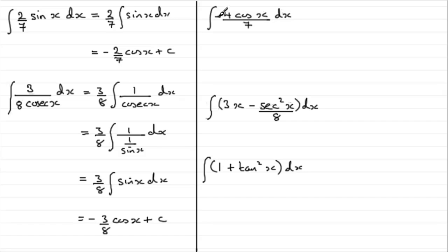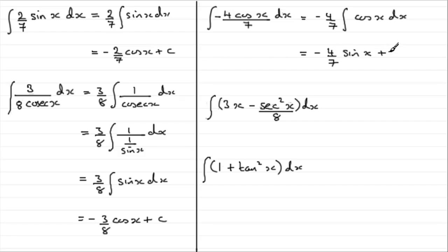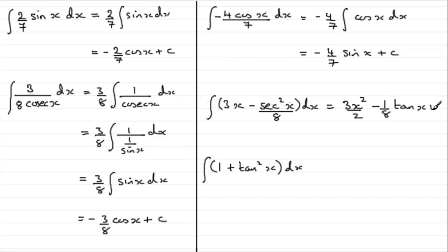For this one, take out minus 4 sevenths, and then you've got the integral of cos x with respect to x. The integral of cos x with respect to x is sin x. So we end up with minus 4 sevenths sin x plus c. And for this one, we've got two terms to integrate. We integrate 3x — that's going to be 3x squared over 2, adding 1 to the power and dividing by the new power. Then think of the second term as minus 1 eighth times sec squared x, so pull the minus 1 eighth out front and integrate sec squared x, which gives tan x. So we get minus 1 eighth tan x plus the constant of integration.